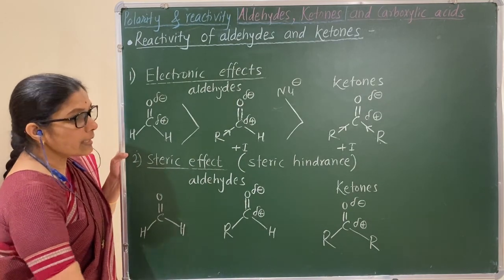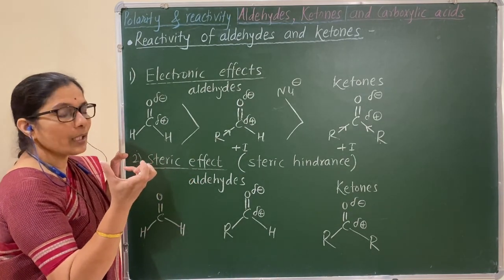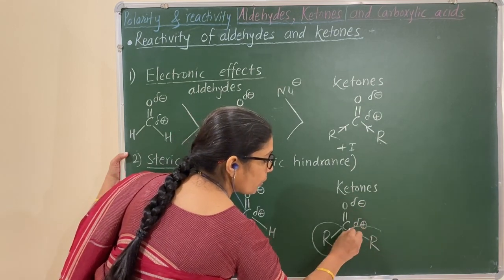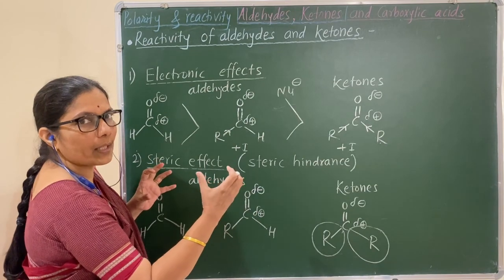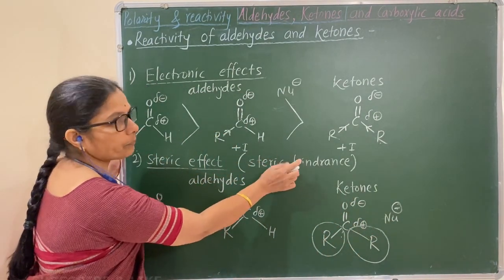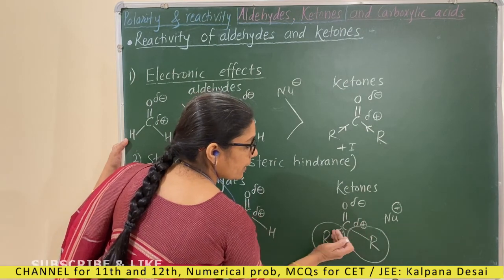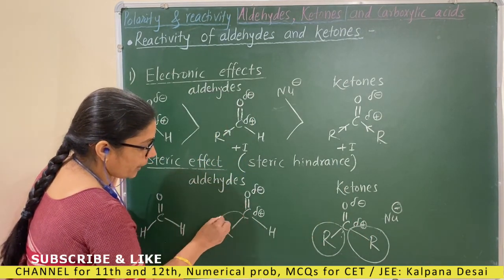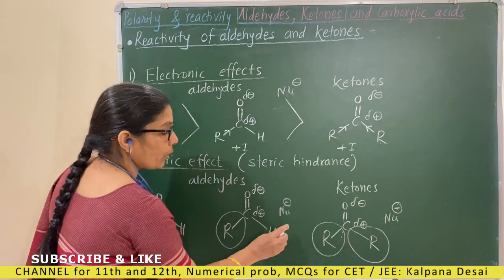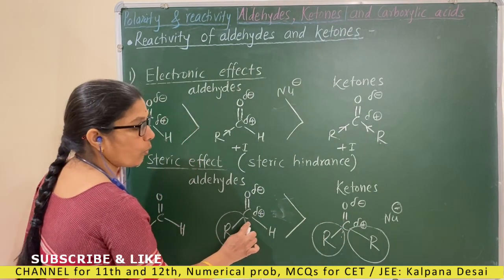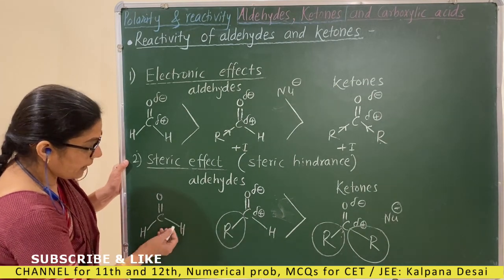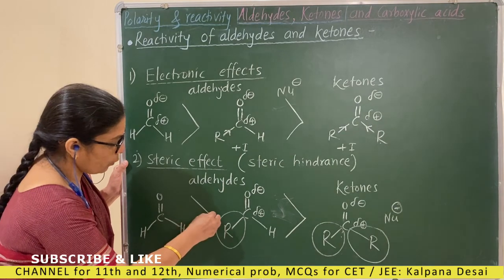The second factor is steric effect — that is steric hindrance. In the case of ketones, two bulky groups — that is larger alkyl groups — are present on the carbonyl carbon, which causes crowding. Due to that crowding, the attack of a nucleophile is somewhat hindered. However, in the case of aldehydes, only one bulky alkyl group is present, so the attack of a nucleophile takes place more easily than in ketones. In formaldehyde, there is no bulky group, so there is even less crowding and it is the most reactive.